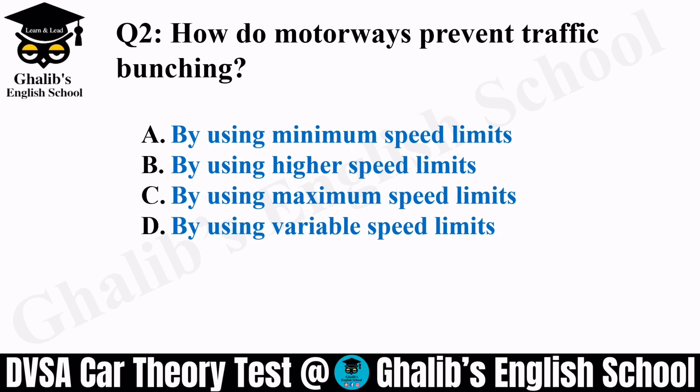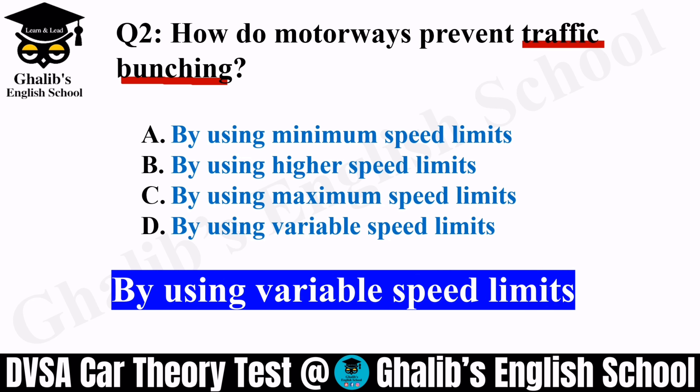Question 2. How do motorways prevent traffic bunching? Traffic bunching means a group of vehicles traveling at the same speed in all three lanes of the motorway — that's very dangerous and a potential hazard. If one loses control it can hit others and cause a serious accident. The options are: minimum speed limits, higher speed limits, maximum speed limits, or variable speed limits. From the control room, they use variable speed limits to prevent traffic bunching.